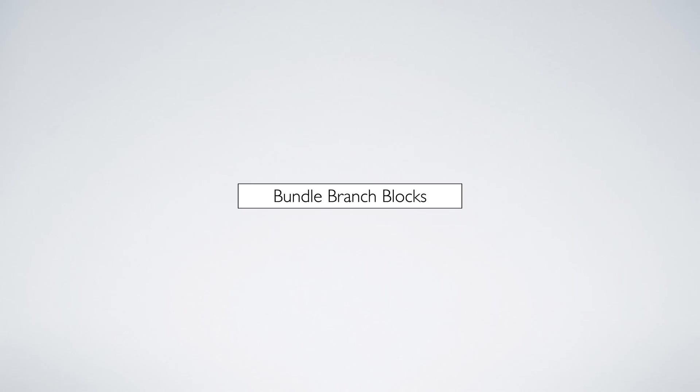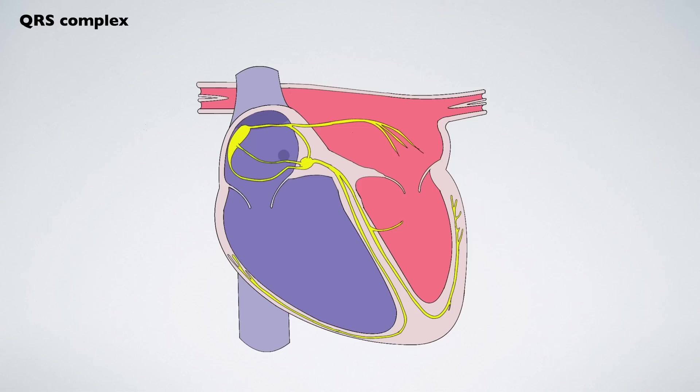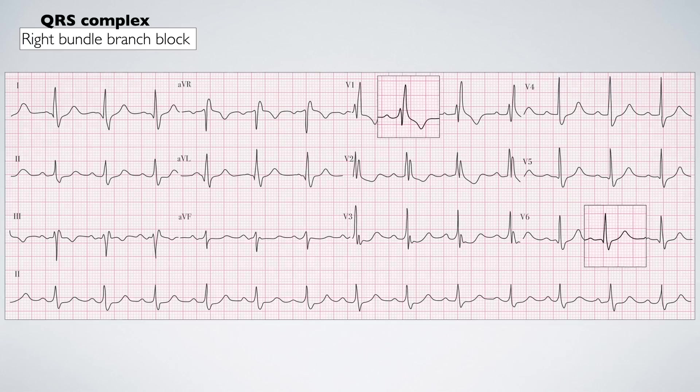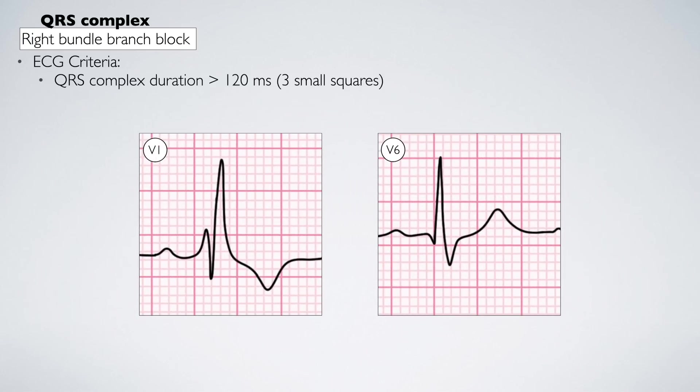Next are the bundle branch blocks. Blocks of the left or right bundle branch cause asynchronous depolarization of the ventricles, producing broad QRS complexes and ST segment changes. Right bundle branch block is present if the QRS complexes are greater than 3 small squares in duration. There must be an RSR wave in V1 and a deep S-wave with duration equal to or greater than 1 small square in V6.